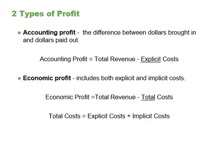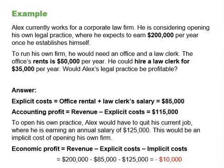Consider the following example. Alex currently works for a corporate law firm and is considering opening his own legal practice, where he expects to earn $200,000 per year. To run his own firm, he would need an office renting for $50,000 per year and a law clerk at $35,000 per year. The explicit costs total $85,000. Accounting profit equals revenue minus explicit cost: $200,000 minus $85,000 equals $115,000.